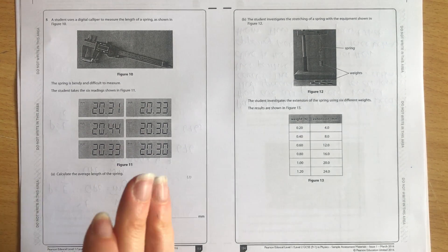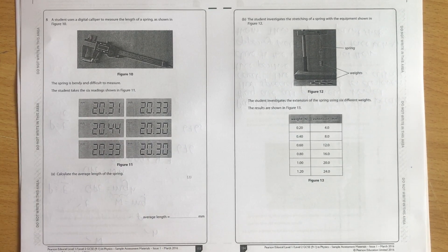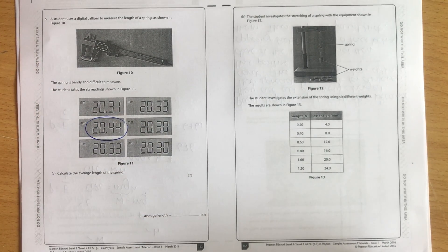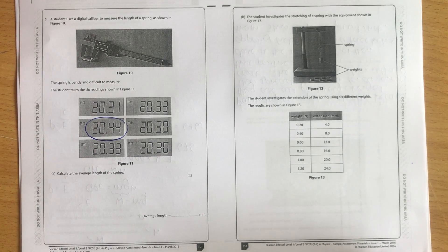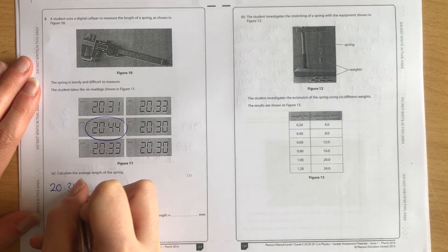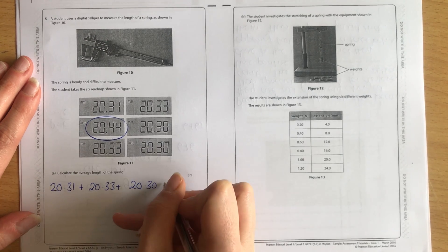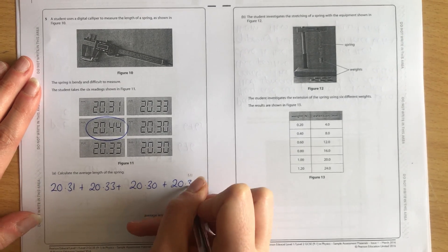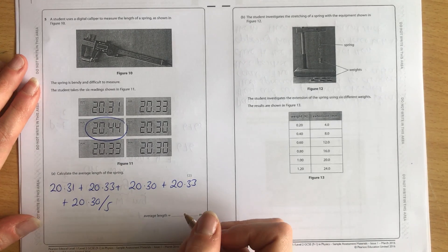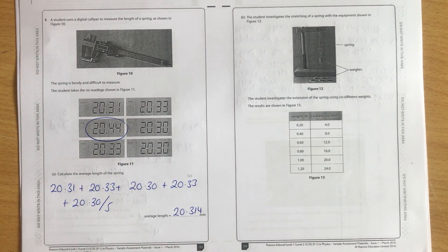For average, I always add everything up and divide by two, but step one is to work out if there are any outliers, and I would say yes there are. This one here, 20.44, is very different to the rest of them, so I'd count that as an outlier and ignore it. I'm not going to use it again, it's an anomaly. So 20.31 plus 20.33 plus 20.30 plus 20.33 plus 20.30 divided by 5 gives me an average length of 20.314 millimetres, which seems about right.